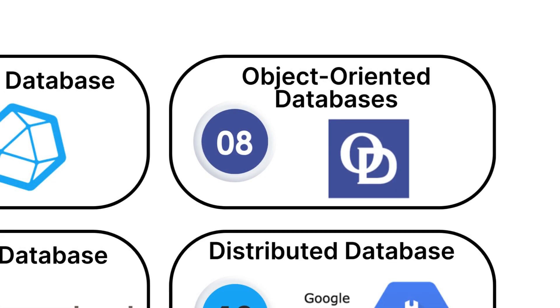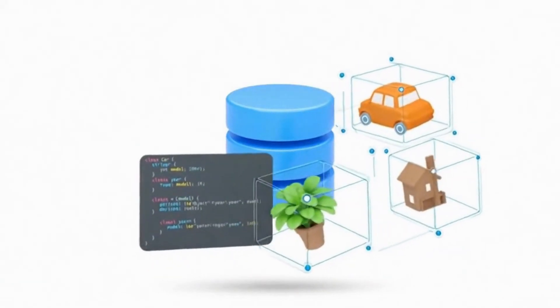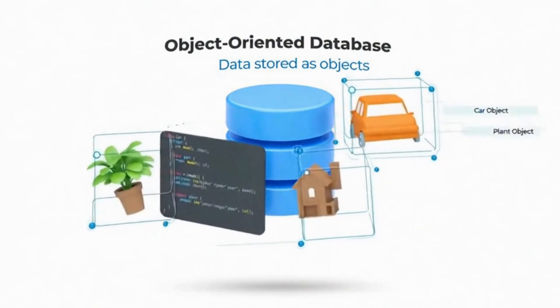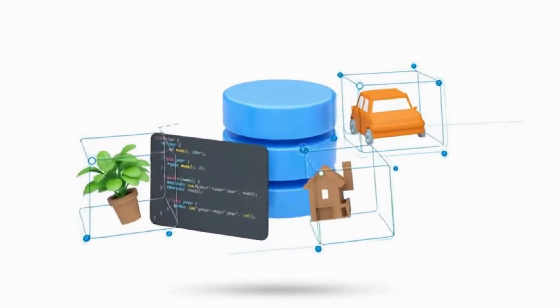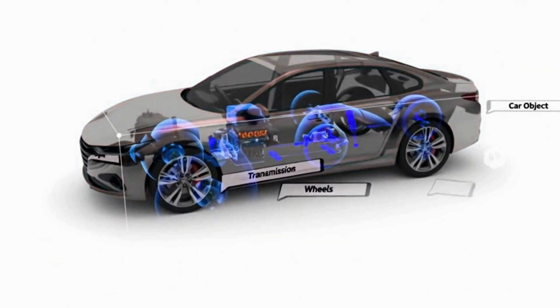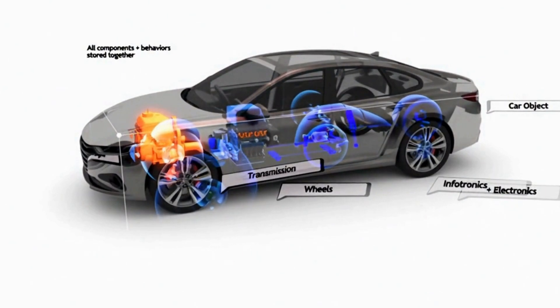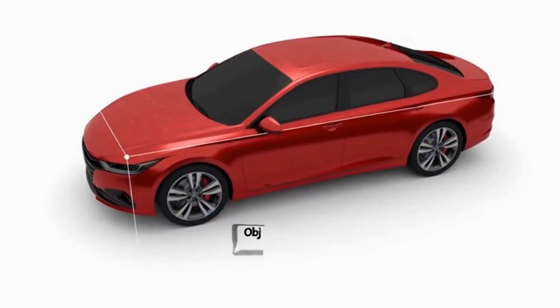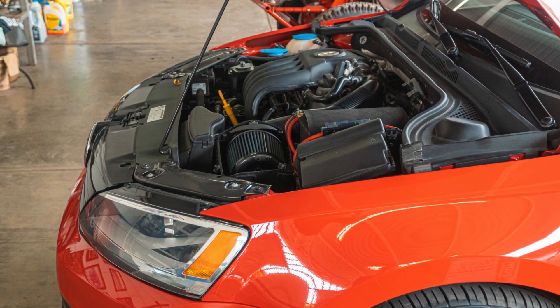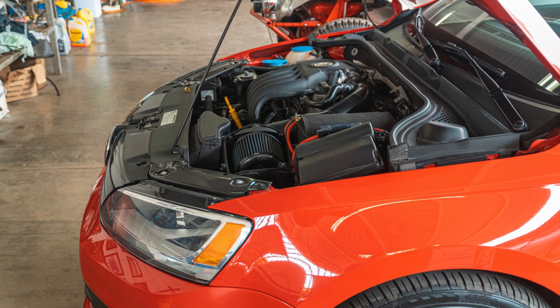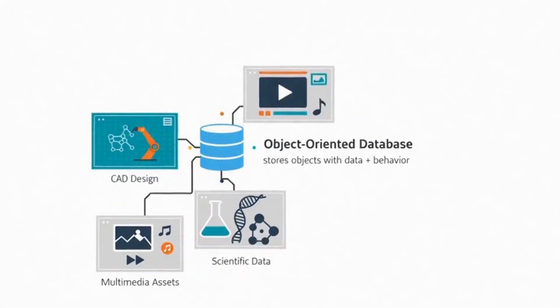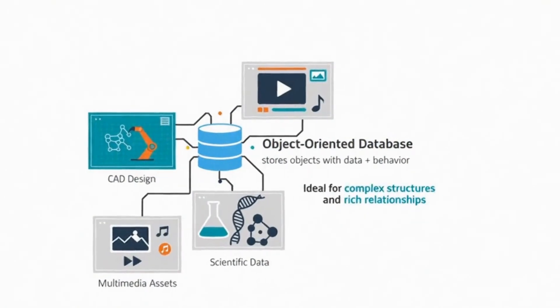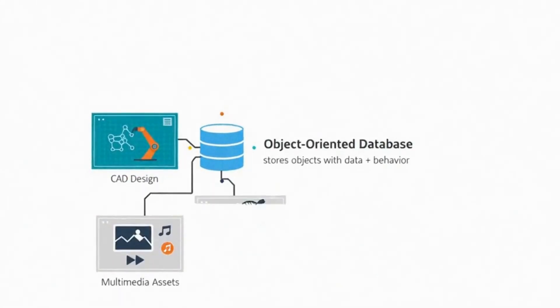Number eight, object-oriented databases. Object-oriented databases store data as objects, just like in object-oriented programming. Think of them as digital storage for complex real-world things. Instead of breaking down a car into separate tables for engine parts, wheels, and electronics, an object-oriented database can store the entire car as one complex object, with all its components and behaviors intact.